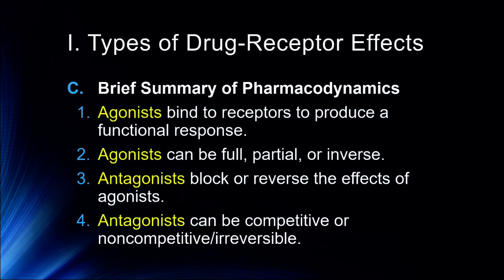A brief summary of this pharmacodynamics: agonists bind to receptors to produce a functional response, and can be full, partial, or inverse. Antagonists block or reverse the effects of agonists, and can be competitive or non-competitive/irreversible. Most of the drugs we discuss as full non-competitive antagonists include flumazenil, naloxone, and naltrexone, which completely block the action of opioid agonists or, in the case of flumazenil, benzodiazepine agonists.